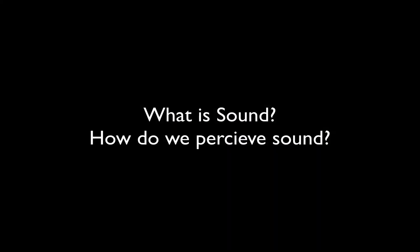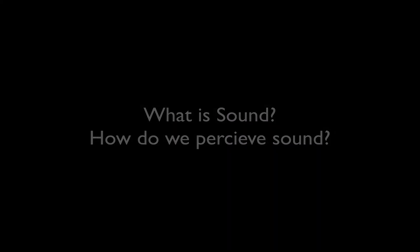Hi everyone, welcome to this tutorial on the basic audio signal path. First of all, I thought we would start with a question: what is sound, or how do we perceive sound? In the case of music, sound is created by a variety of instruments — string instruments like violin, viola, cello, and bass; woodwind instruments; brass and percussion; as well as contemporary rhythm section instruments like a drum kit, bass, and guitars.